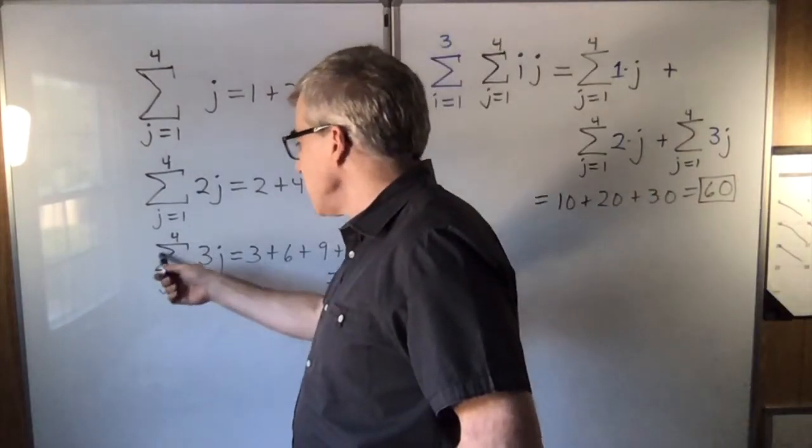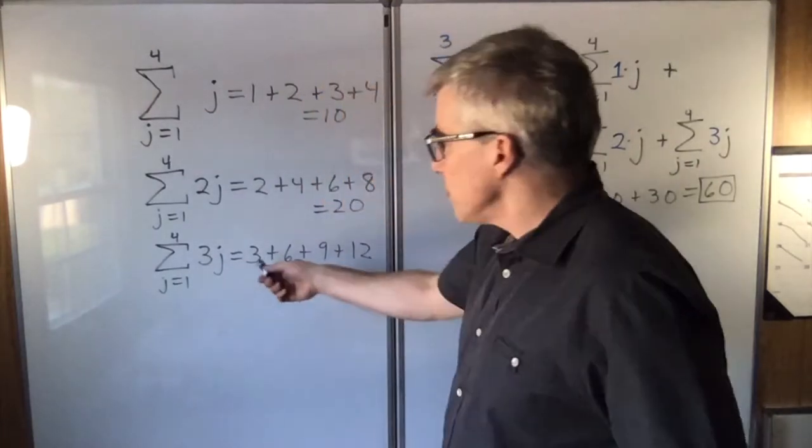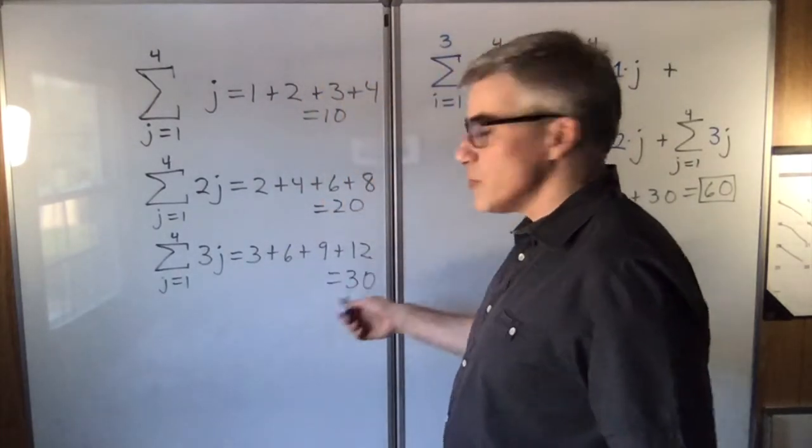Now if you have the sum from j equals 1 to 4 of 3j, that would be 3 plus 6 plus 9 plus 12 equals 30.